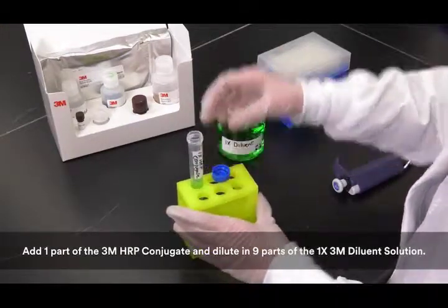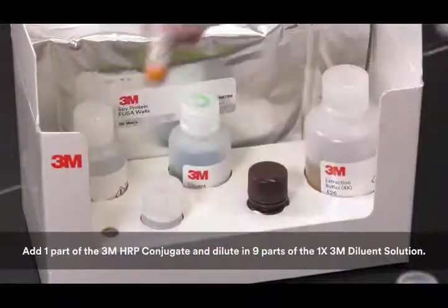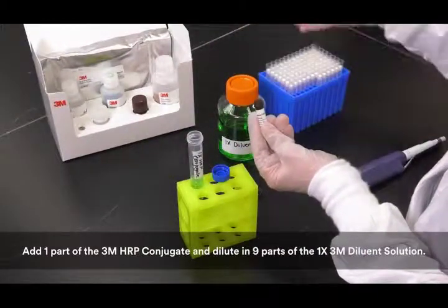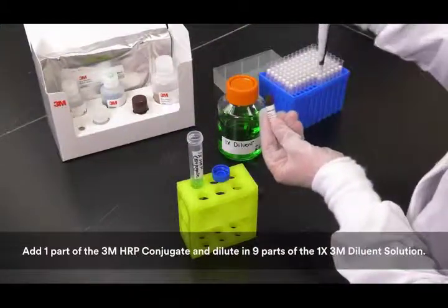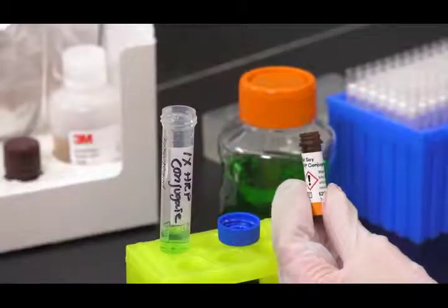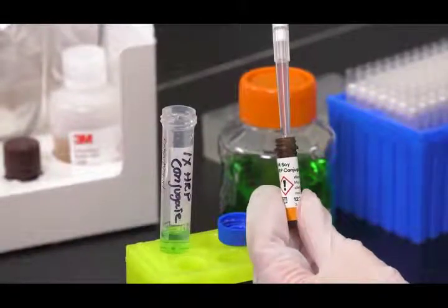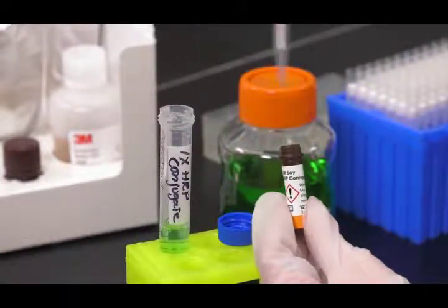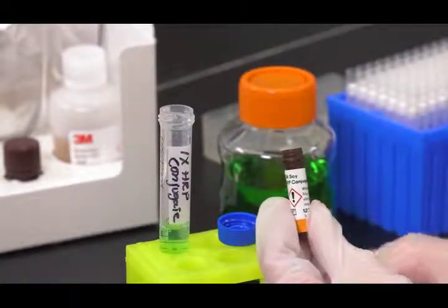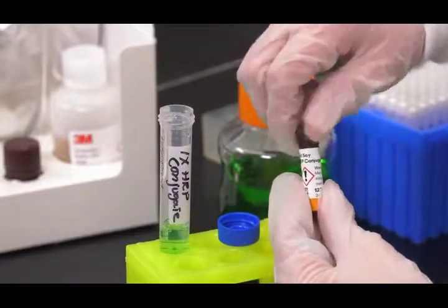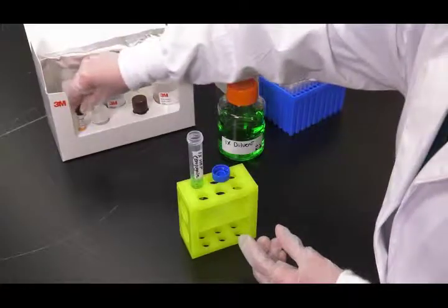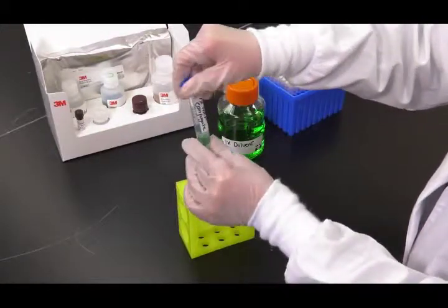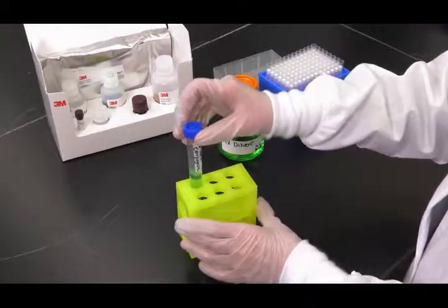To prepare the 3M allergen protein HRP conjugate, add one part of the conjugate and dilute in nine parts of the 1X diluent solution. Prepare immediately before use and do not store. Each 3M ELISA well requires 100 microliters of this 1X working conjugate.